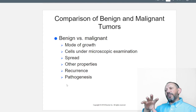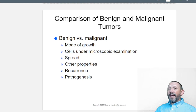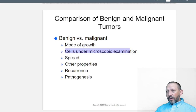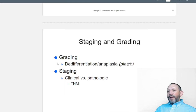A teratoma is a tumor that contains all different tissue types — hair, eye, liver, bone — like a little mini-me growing inside you. There are many documented cases. Regarding malignant versus benign: benign usually means it won't hurt you; malignant means it will. We look at mode of growth, how cells appear under microscopic examination, whether they're spreading, recurrence, and whether they cause problems.